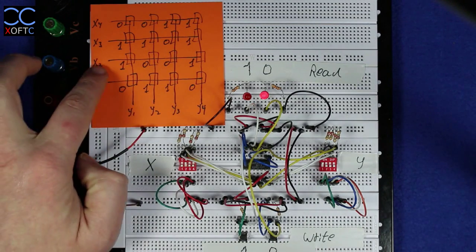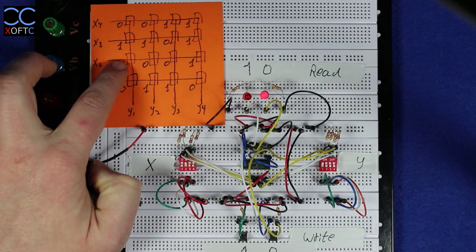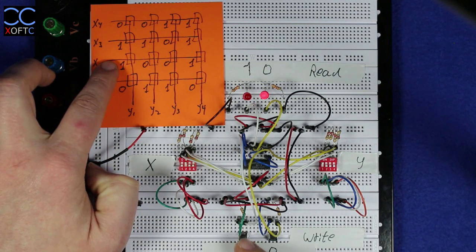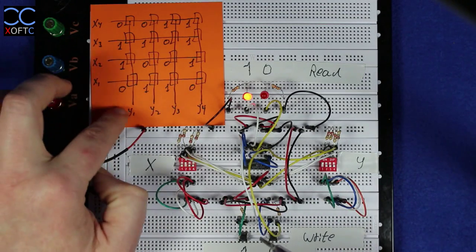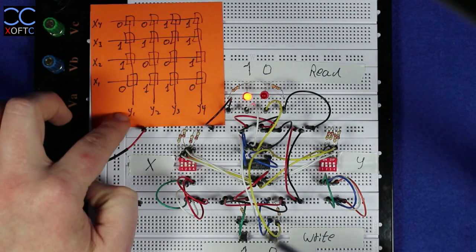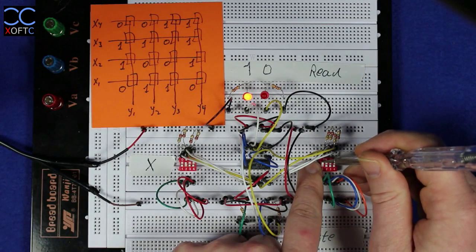So right now we've set X2 Y1 to zero and I'm going to set it back to number one. And now I'm going to lower pin Y1 and I'm going to move to the next pin.